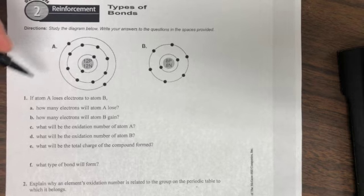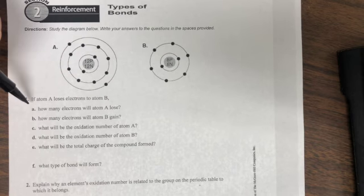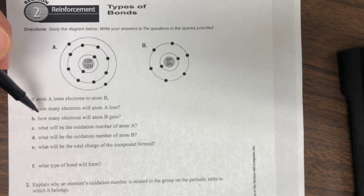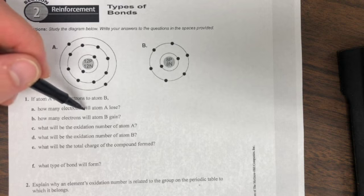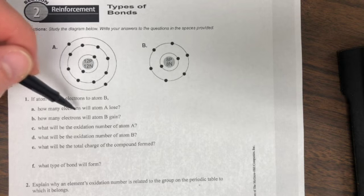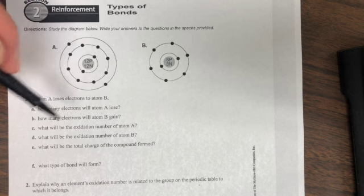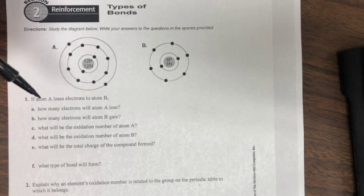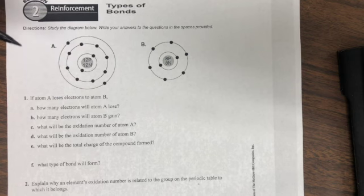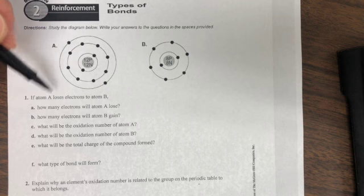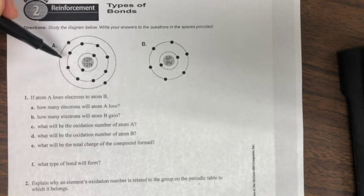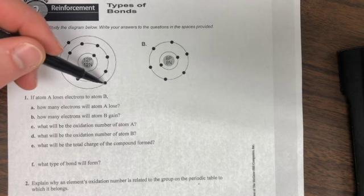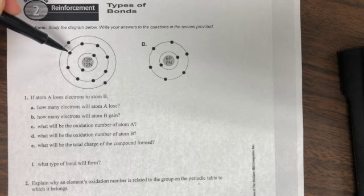Question number one: if atom A loses electrons to atom B, how many electrons will atom A lose? So what's the magic number that it wants to achieve? What does an atom want in order to be quote-unquote happy? When you look at atom A here, they're saying it's going to lose electrons. Is it going to lose just one or both of those outside ones or more?